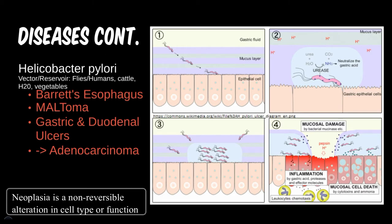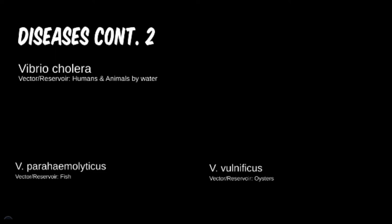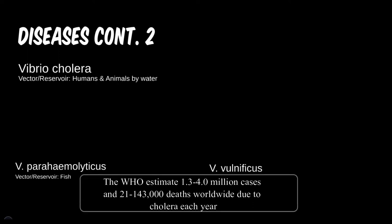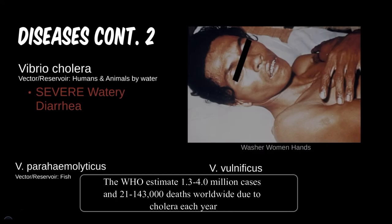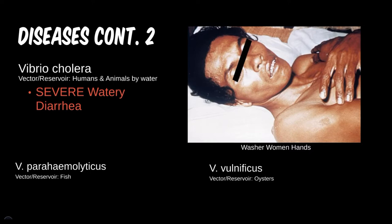For the Vibrio genus, the most important one to focus on is V. cholera. Of course you've probably heard of cholera. Though uncommon in industrialized nations, it is still a leading cause of diarrheal disease and death in developing nations. It mostly causes severe, watery diarrhea that can lead to lethal dehydration. Imagine your worst case of watery gastritis and multiply it by 100 — that's about how powerful a laxative V. cholera can be.